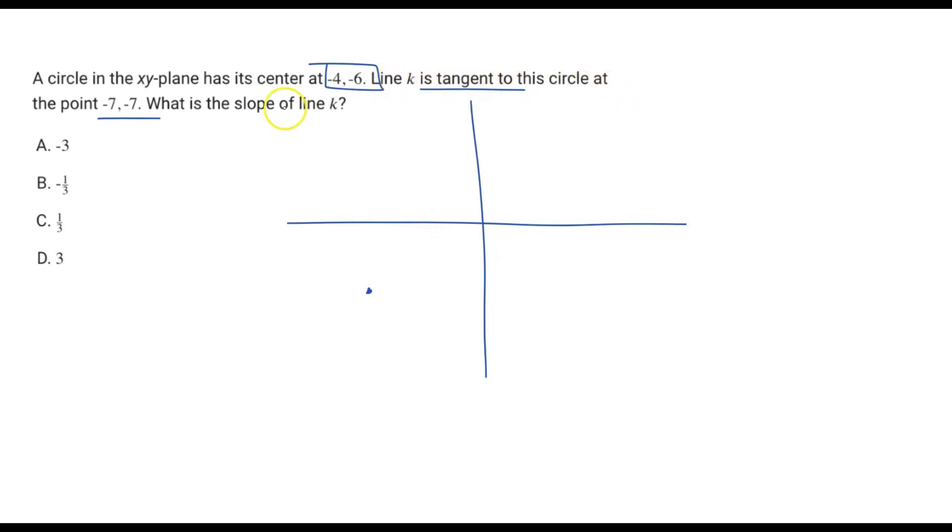Line k is tangent to the circle at the point (-7, -7), and (-7, -7) is out here somewhere, so the radius is going to be like somewhere like this. That's a really lopsided, ugly-looking circle and probably not drawn to scale or accurately—this is just a visual representation.